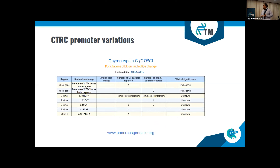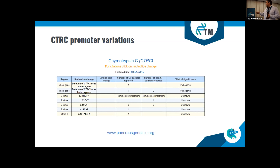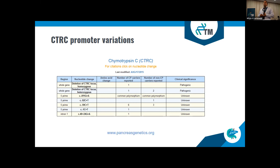This damaged expression of CTRC can theoretically be caused by mutations in the promoter region of CTRC. If you look at the pancreas genetics database, we can see that there is not much known about the promoter variants of the CTRC gene. There are actually four variants that have been published, and none of them proved to be pathogenic in terms of pancreatitis.